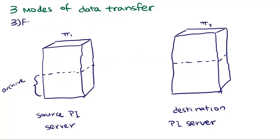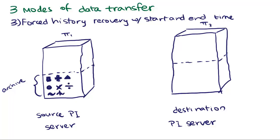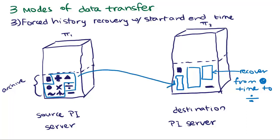The third mode is forced history recovery with start time and end time specified. This allows you to recover a data gap in the receiving PI server. In this mode, you will collect data within the specified time period and then stop.